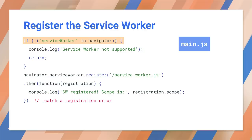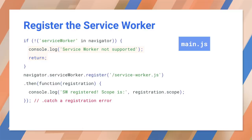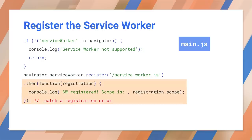This code starts by checking for browser support. It attempts to find the service worker in the Navigator object. If this fails, we'll log a warning and exit. If we have support, call navigator.serviceworker.register. This returns a promise that resolves when a service worker has been registered successfully. We're writing a message to the console after registration to make debugging easier. You can attempt to register a service worker every time the page loads, and the browser will only complete the registration if the service worker is new or has been updated. Otherwise, the existing service worker will remain active.